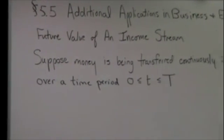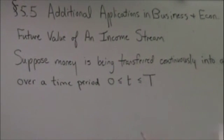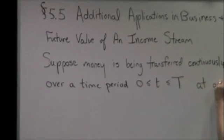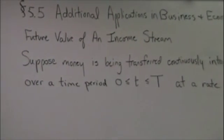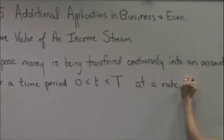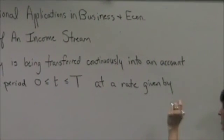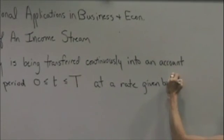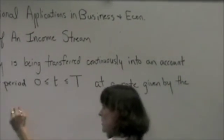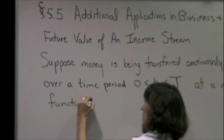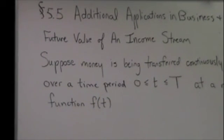So the money is transferred continuously over this whole time period at some rate that's given to you, and it's not that simple. It's given by this function, by the function f of t. And that may be constant, and it may be e to the something. That'd be nice.